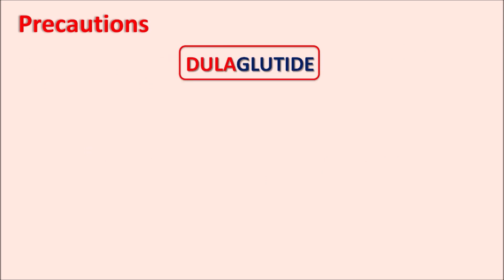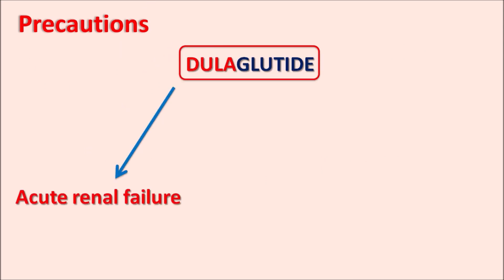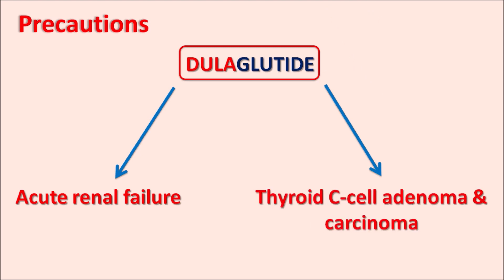This drug can also produce acute renal failure. Nausea, vomiting, and diarrhea caused by this drug can further complicate acute renal failure, so renal function should be monitored carefully. Very importantly, this drug can induce thyroid C-cell adenoma and carcinoma. Thyroid cancer — specifically C-cell adenoma and carcinoma — may develop after long-term treatment with Dulaglutide.